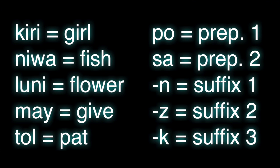Here are some words. We have Kiri, which means girl. Niwa, which means fish. Looney, which means flower. Mai, which means give. Toll, which means pat. Po is one type of preposition. Sa is another type of preposition. And then we have three suffixes: an N suffix, a Z suffix, and a K suffix. These things are going to be getting meanings depending on the sentence that we're looking at as we are moving along.